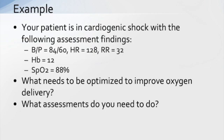What needs to be optimized to improve oxygen delivery? First, the blood pressure is low — it's unlikely we'll get enough oxygen to the tissues. Patients in cardiogenic shock have decreased contractility, which is why the blood pressure is low. Compensatory mechanisms have already kicked in: increased heart rate from the sympathetic nervous system and an increased respiratory rate. With an SpO2 of 88%, the increased respiratory rate is likely trying to increase the amount of oxygen in the blood.